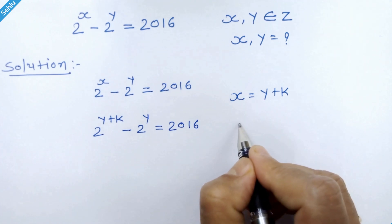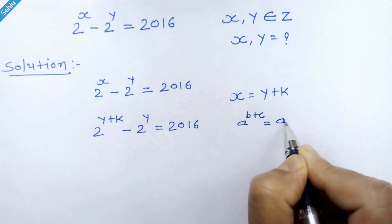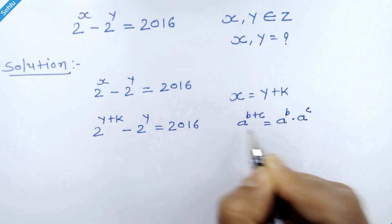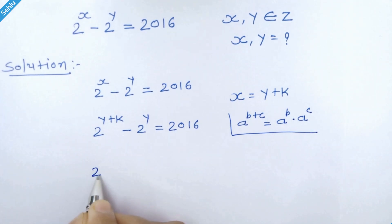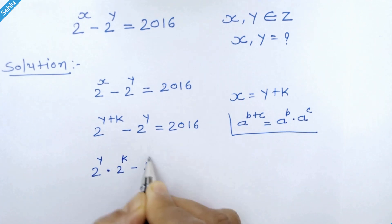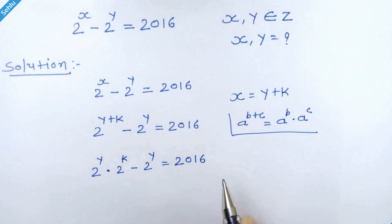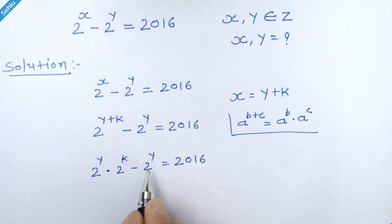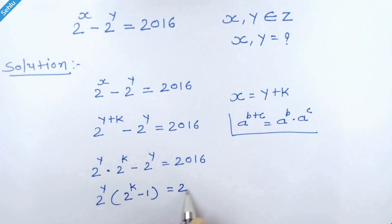Now let's remind this rule: if we have a raised to b plus c, then it can be written as a raised to b times a raised to c. According to this rule, this part can be written as 2 raised to y times 2 raised to k minus 2 raised to y is equal to 2016. From here, we can factor out 2 raised to y, so it will be 2 raised to y times 2 raised to k minus 1 is equal to 2016.